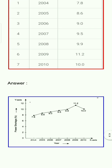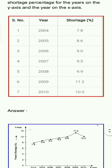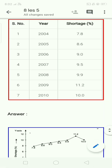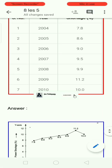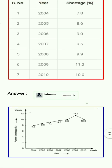We have power shortage percentage on the y-axis and years on the x-axis. The years go from 2004 to 2005, 2006, 2007, 2008, 2009, 2010. We have power shortage on the y-axis, and I will draw the graph accordingly.